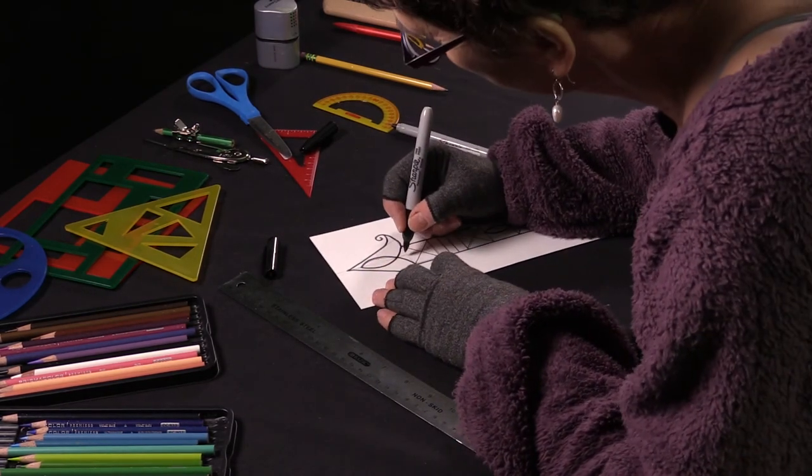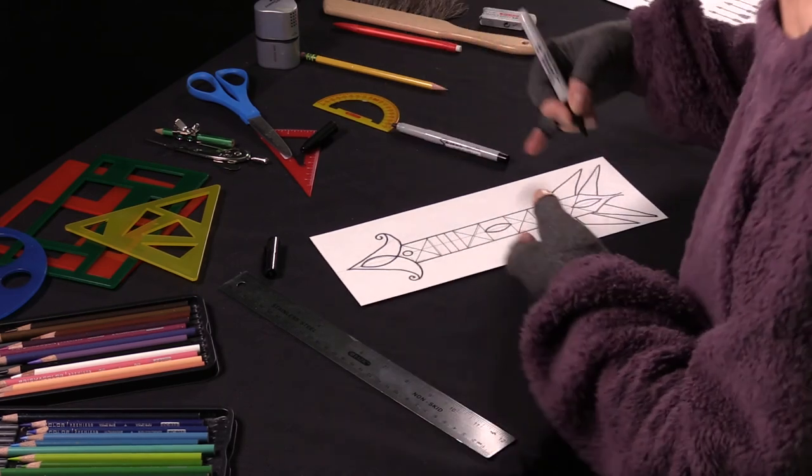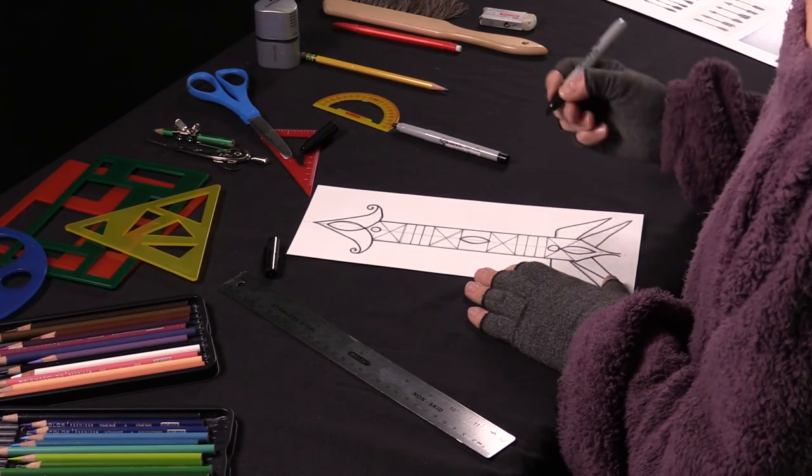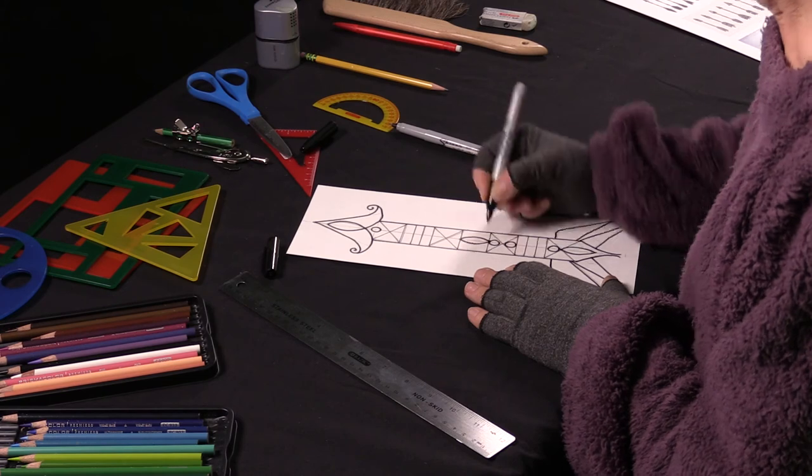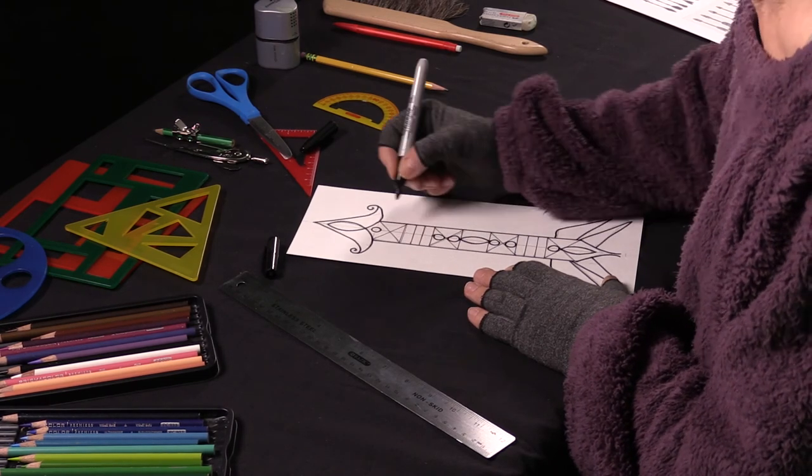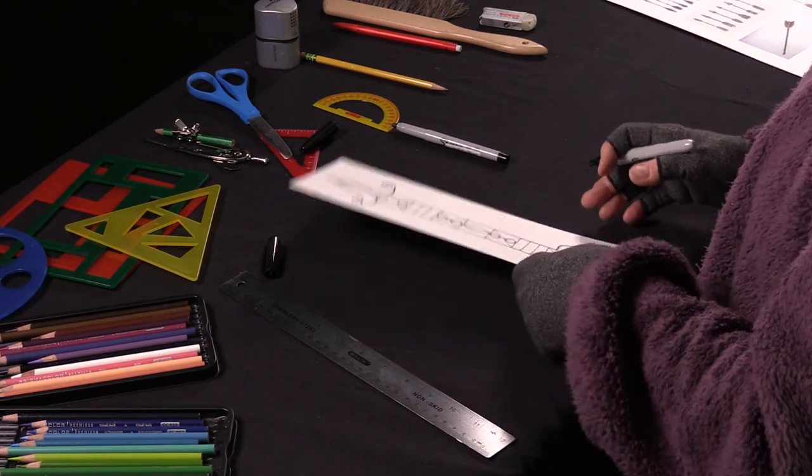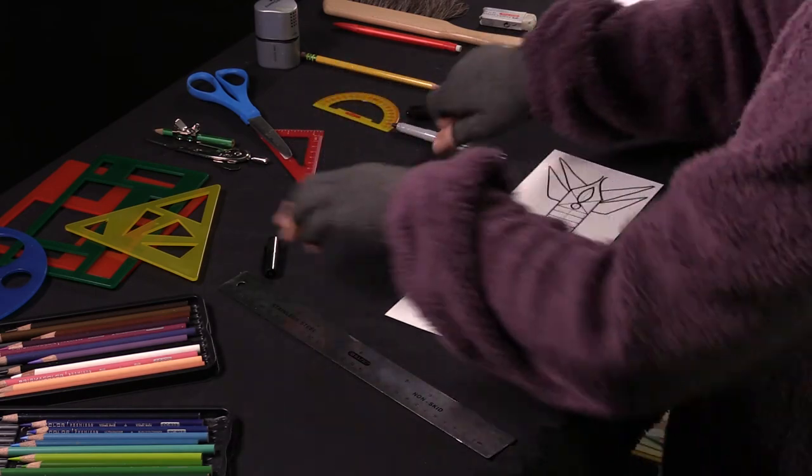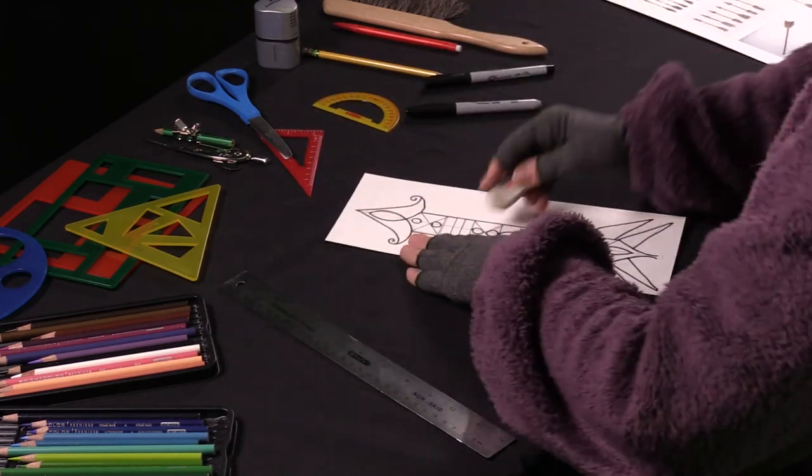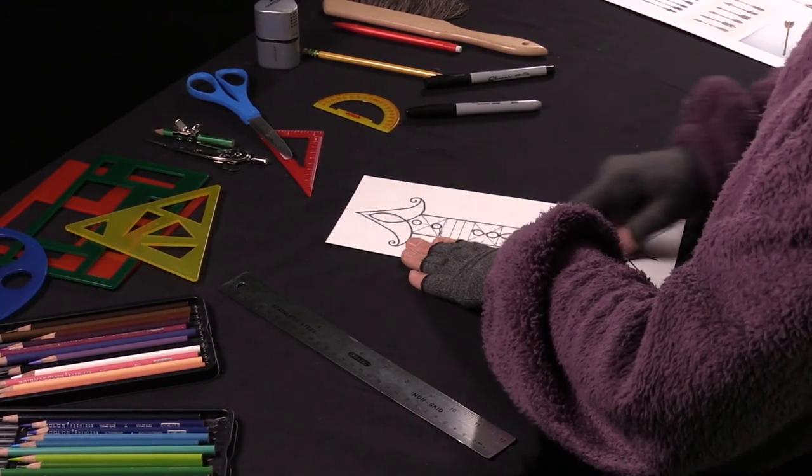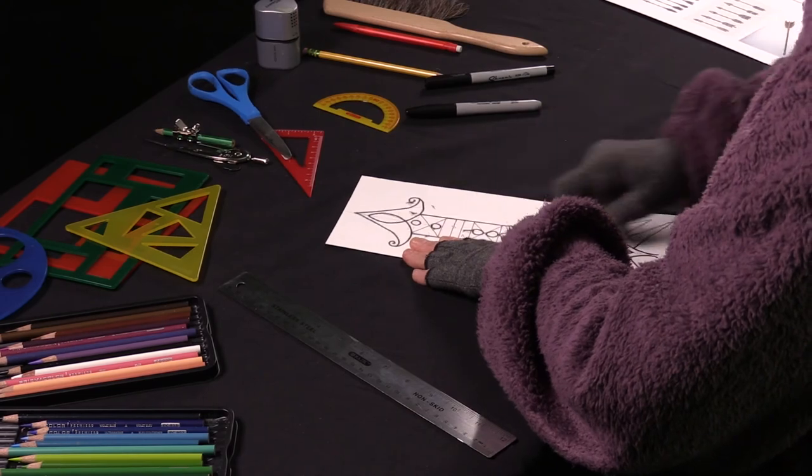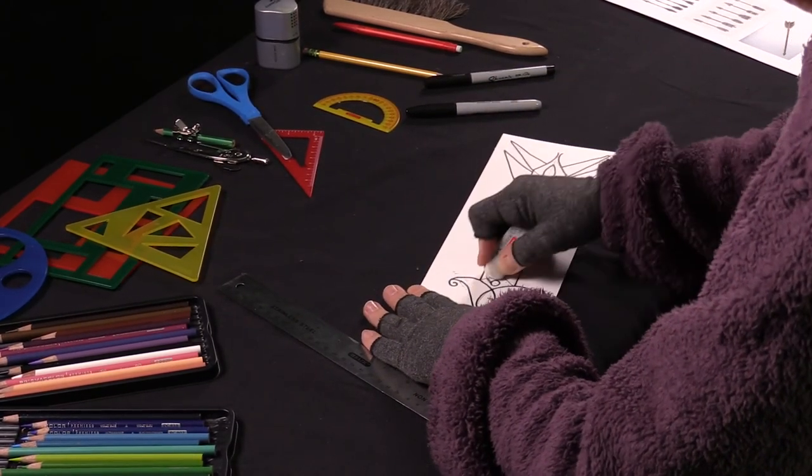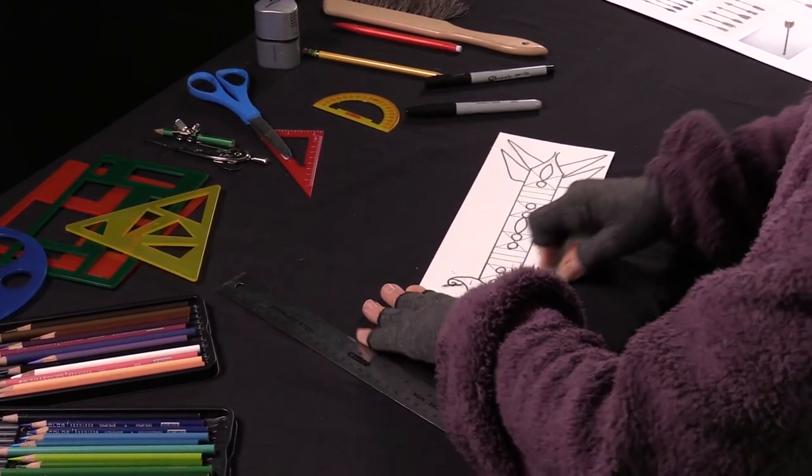I want to add some things. More fancy details. More things that will be fun to color. Okay. I think I'm done. And now I erase the pencil lines. Carefully. And thoroughly.